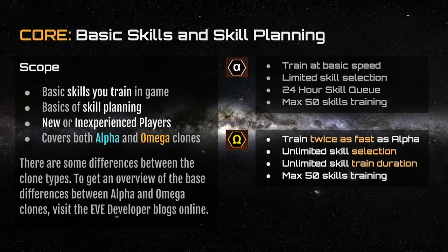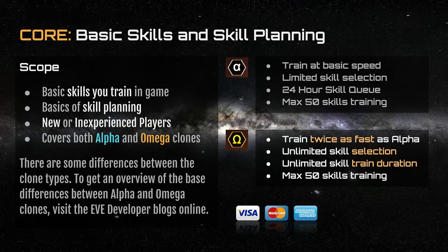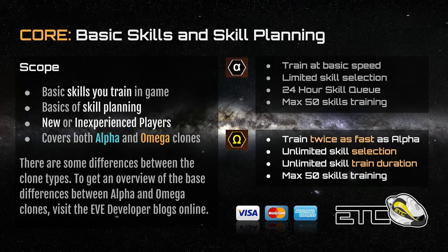To upgrade from Alpha to Omega, there are three options. The first is to pay with real-world dollars. If you don't have access to a credit card or online payment method, you can purchase what's called an EVE time code from certain online vendors who may accept PayPal or other methods. EVE time codes are alphanumeric code sets, similar to prepaid phone activation codes, and can be exchanged for gameplay time in your EVE administration panel. The third method is through Plex.